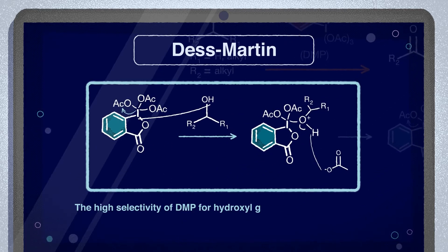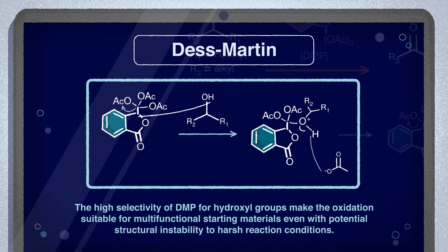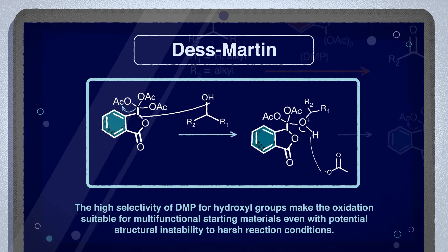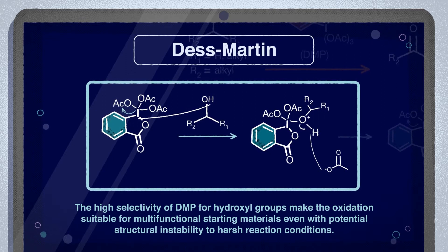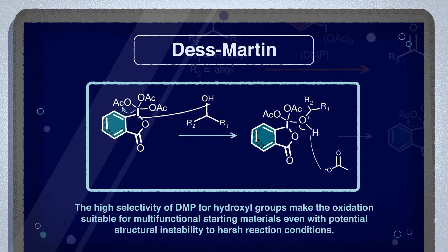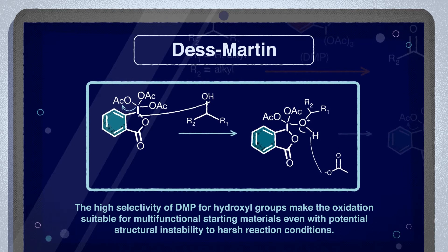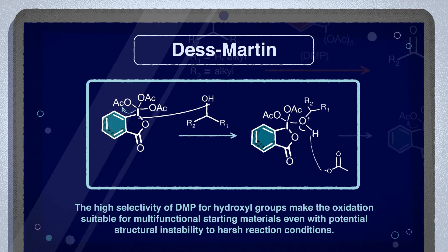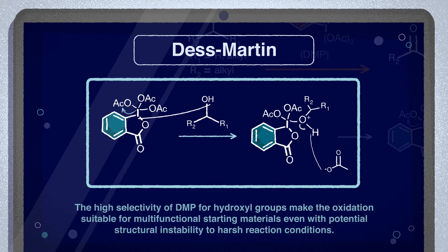The high selectivity of DMP for hydroxyl groups makes the oxidation suitable for multifunctional starting materials, even with potential structural instability to harsh reaction conditions. So a broad variety of alcohols can be utilized, even though the oxidation of mono and difluoro alcohols remains challenging.